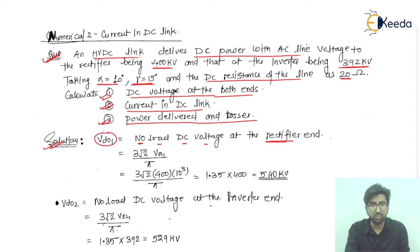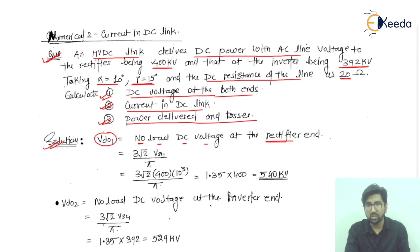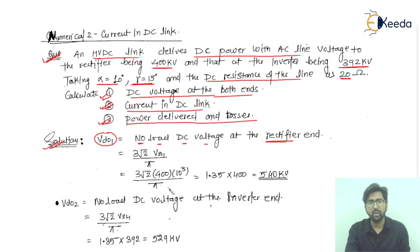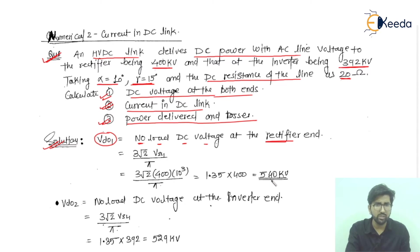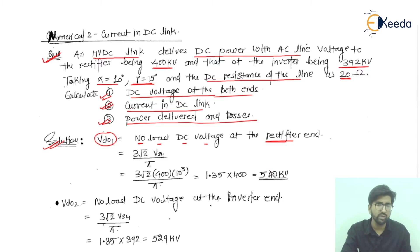V_DO1 equals (3√2 × V_SL1) / π. We multiply 3, root 2, and 400 kilovolts — since we are finding values on the rectifier side — then divide by π. The constant 3√2/π equals 1.35, so V_DO1 = 1.35 × 400 kV = 540 kilovolts.